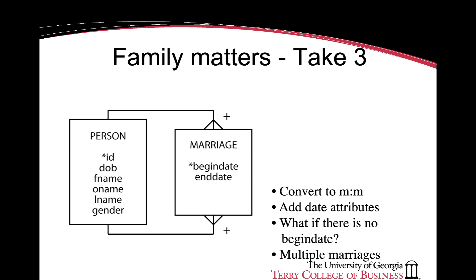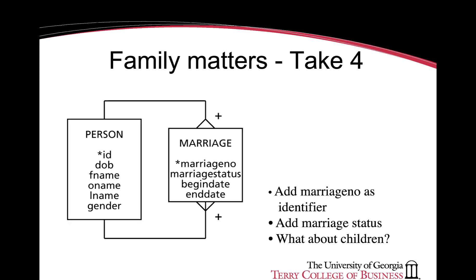A many-to-many relationship can be decomposed into two one-to-many relationships with a second entity called marriage. The marriage entity itself has a start and an end date, as people can have multiple marriages. Note the use of the crow's foot on the many ends of the relationship. This tells us that the marriage entity has an identifier that is a composite primary key based on the IDs of the two people getting married and the start date of the marriage. If there is no begin date, we can use a marriage number as an identifier in the composite primary key. We can also add marriage status indicating the state of the marriage.